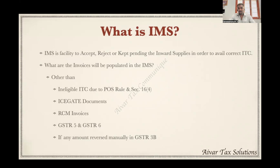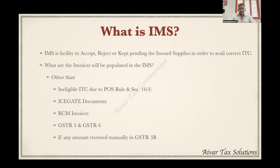Which invoices are auto-populated in Invoice Management System? Other than five categories of invoices, all invoices are auto-populated in IMS. The invoices NOT auto-populated are: ineligible ITC due to place of supply rules — for example, accommodation services availed in another state — that ITC will not auto-populate in IMS. Also, ITC where the time limit under Section 16(4) has lapsed will not auto-populate in IMS.